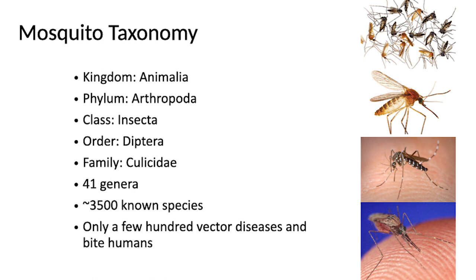First we have to know as much as we can about mosquitoes so that we can effectively control them. Within the family Culicidae — which is all mosquitoes — there are 41 genera and over 3,500 known species. They're a very diverse group of organisms. Of these 3,500 known species, only a few hundred vector diseases, and even fewer actually bite humans.